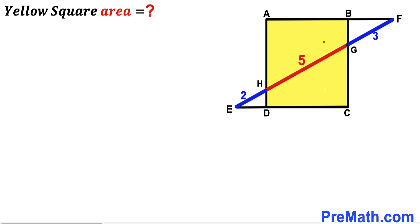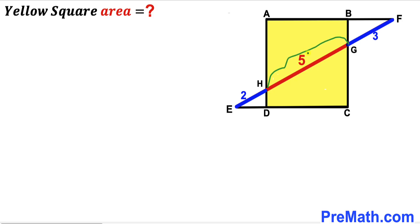Welcome to pre-math. In this video we have got this yellow shaded square ABCD along with this line EF, as you can see in this given diagram, such that segment EH is two units, segment GH is five units, and segment FG is three units. Our task is to calculate the area of this yellow shaded square ABCD.